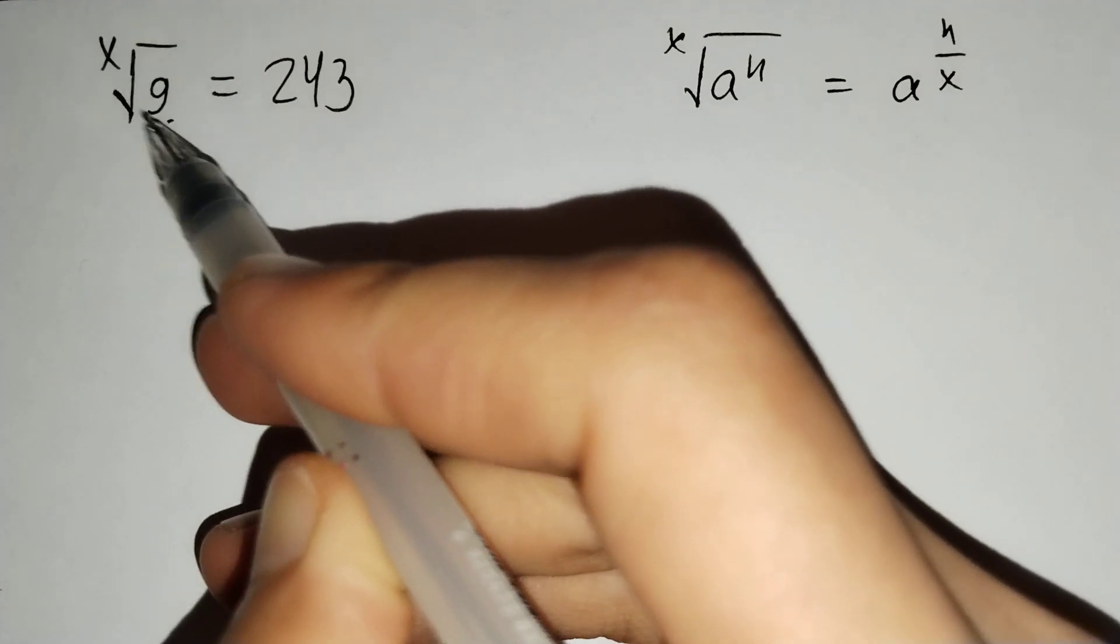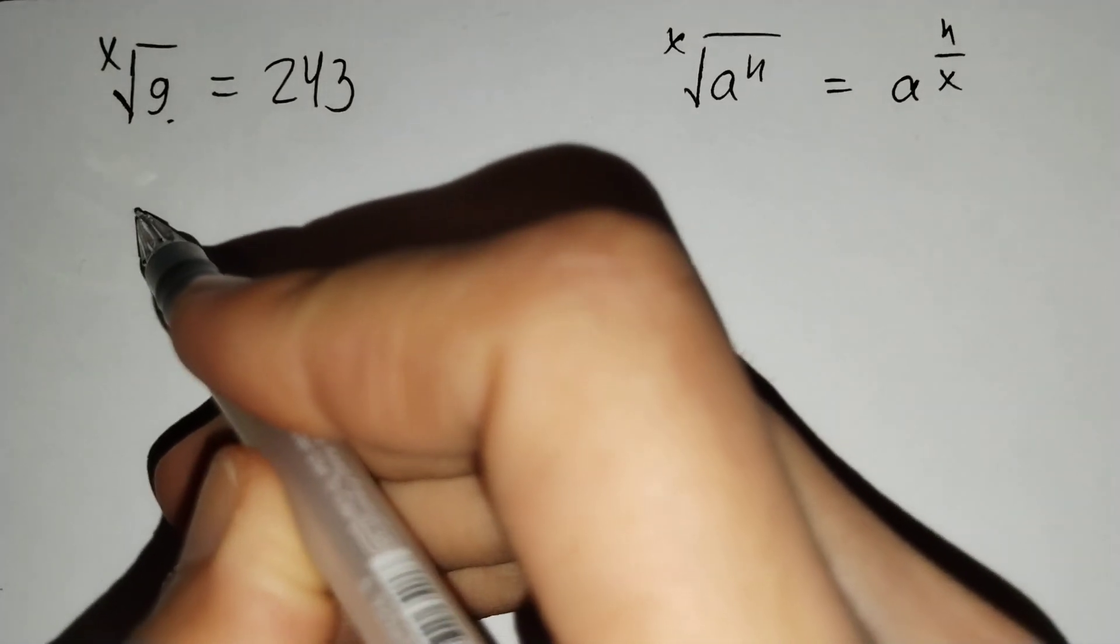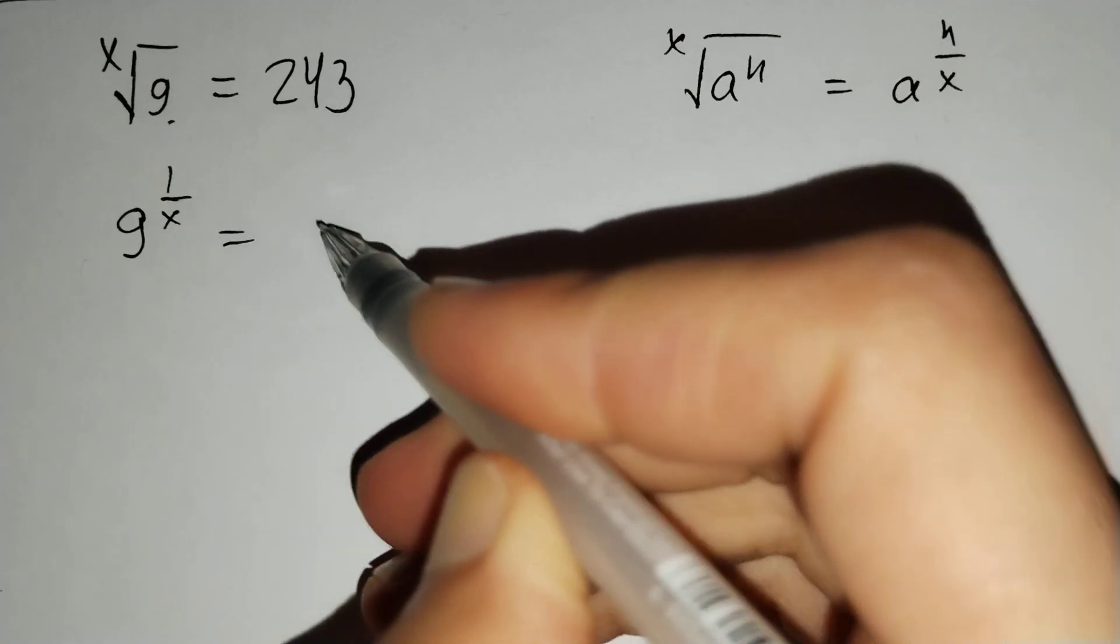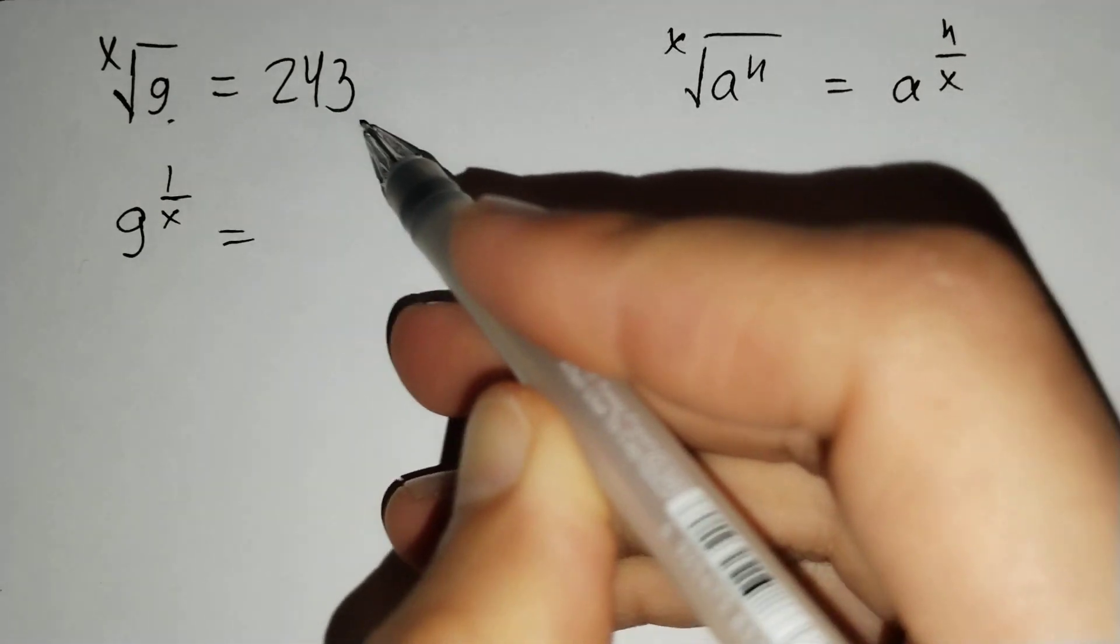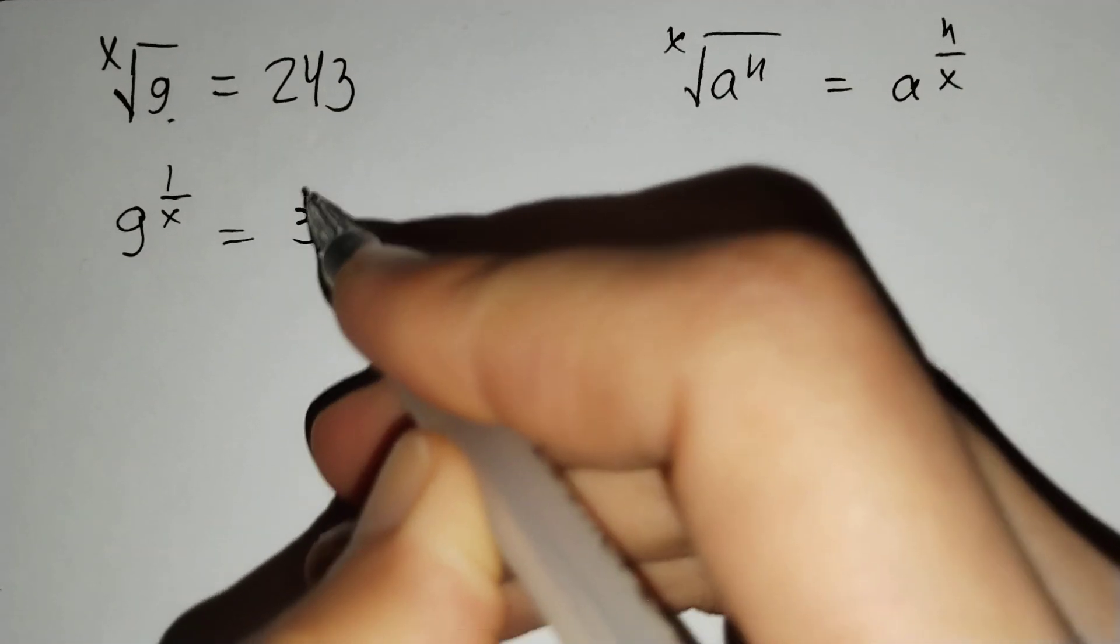And here, the root of 9 from x degree equals to 9 power 1 over x equals to 243 equals to 3 power 5.